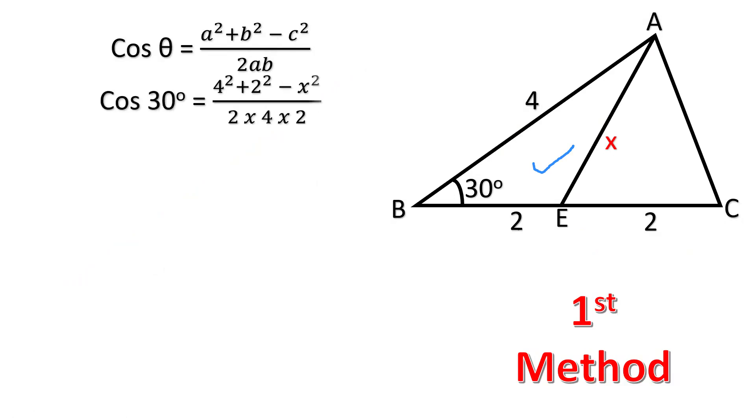So that angle is 30 degrees and the two sides which are making those angles are 4 and 2, and the third side is X.